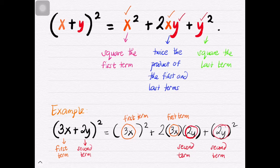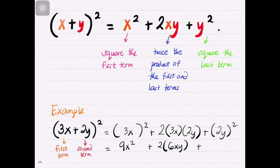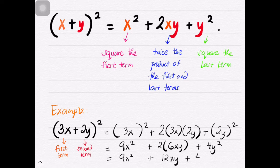Now let's simplify. The square of 3x becomes 9x², plus two times the product of 3x and 2y, which is 6xy, plus the square of 2y, which is 4y². We just have to simplify the middle term, so we'll have 9x² + 12xy + 4y².